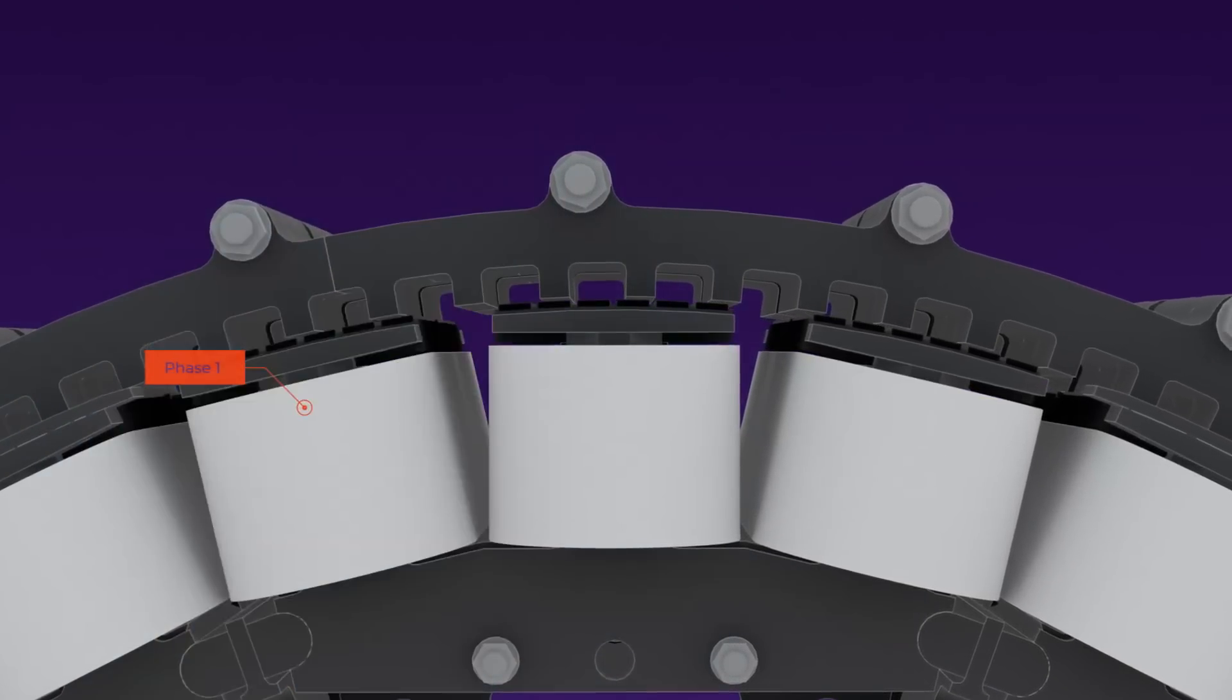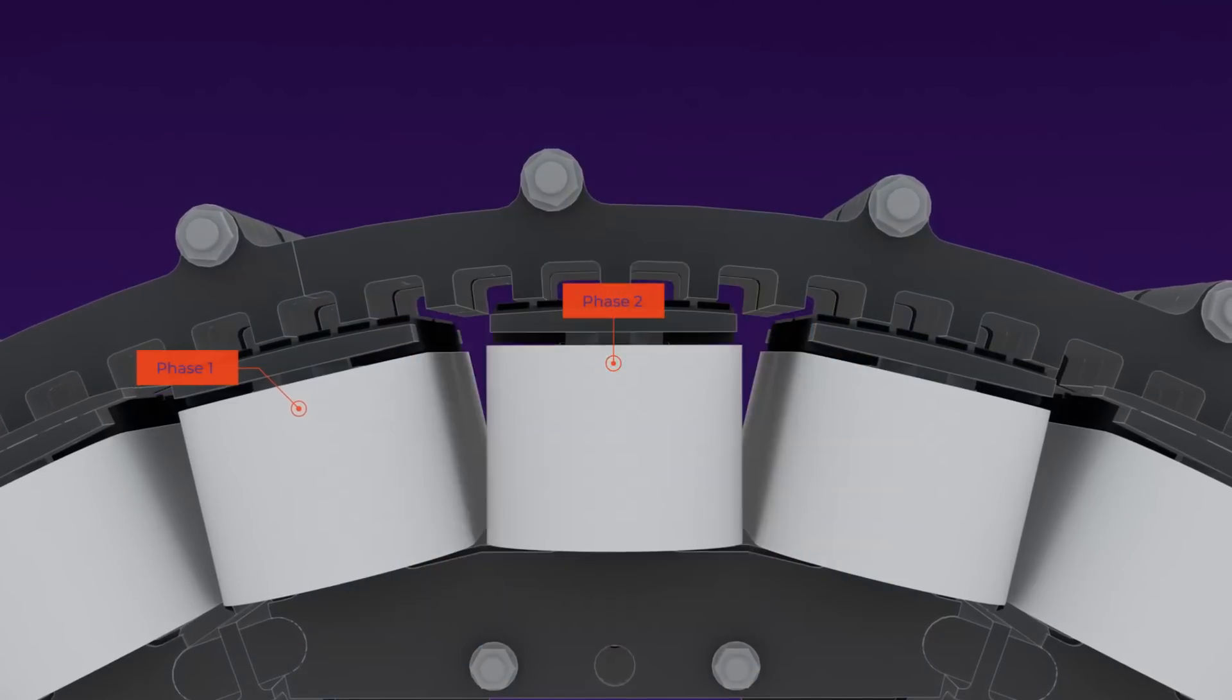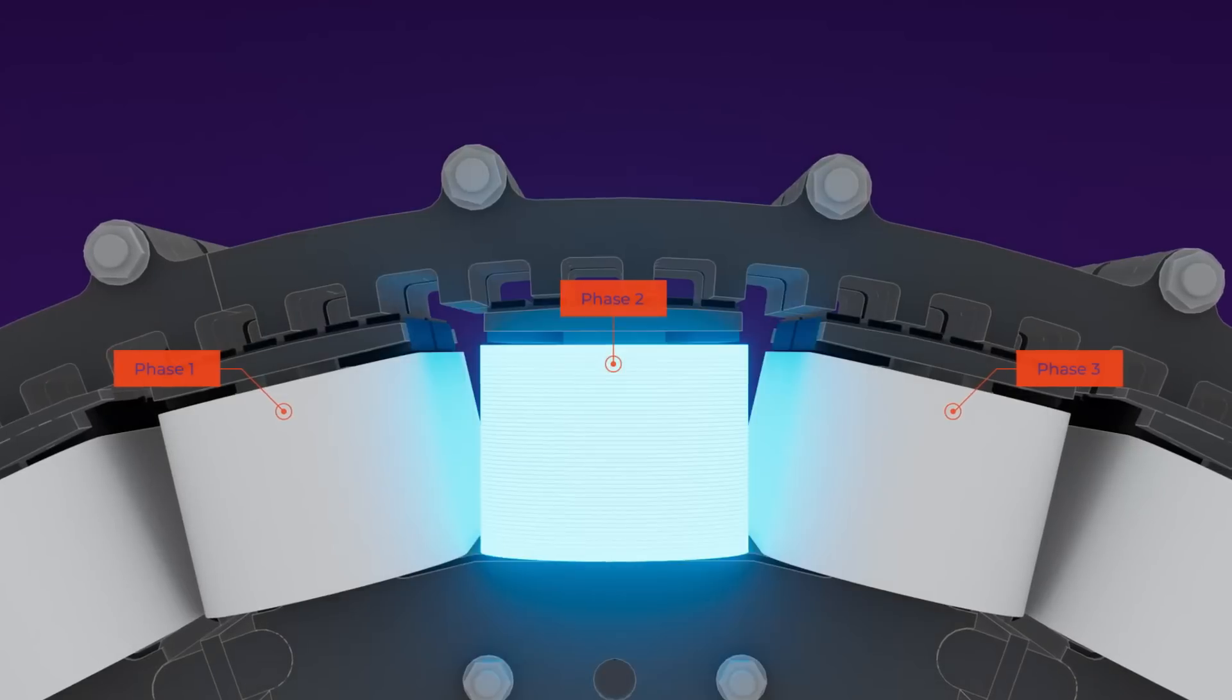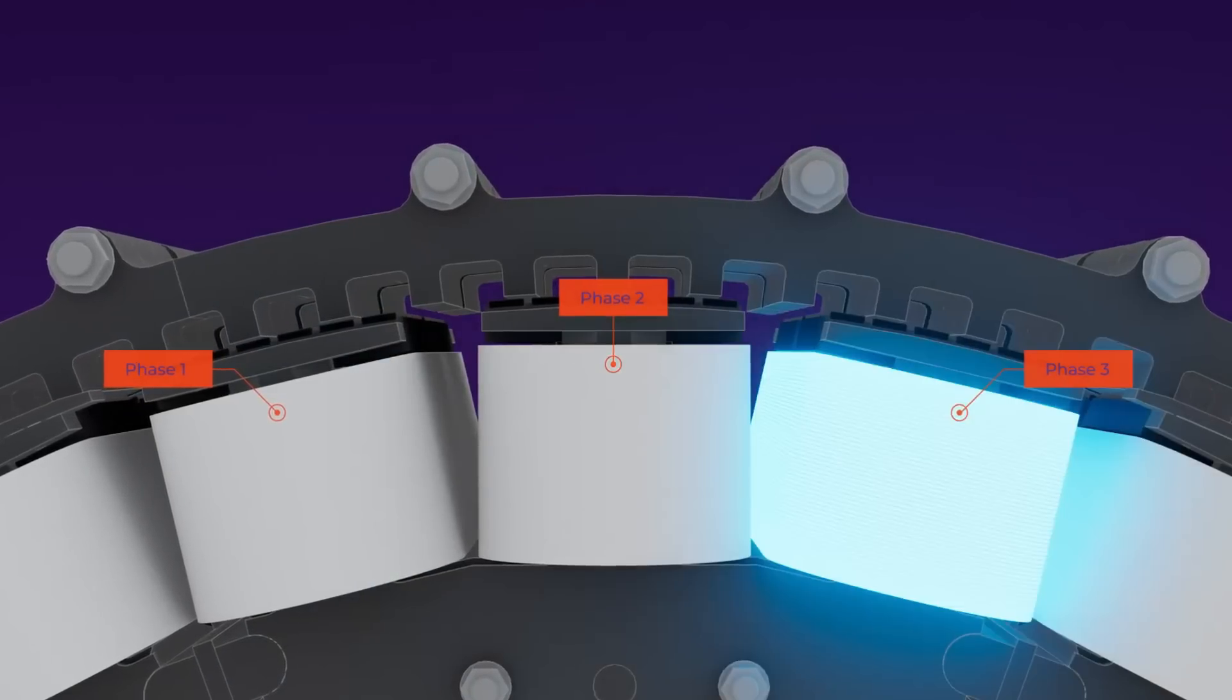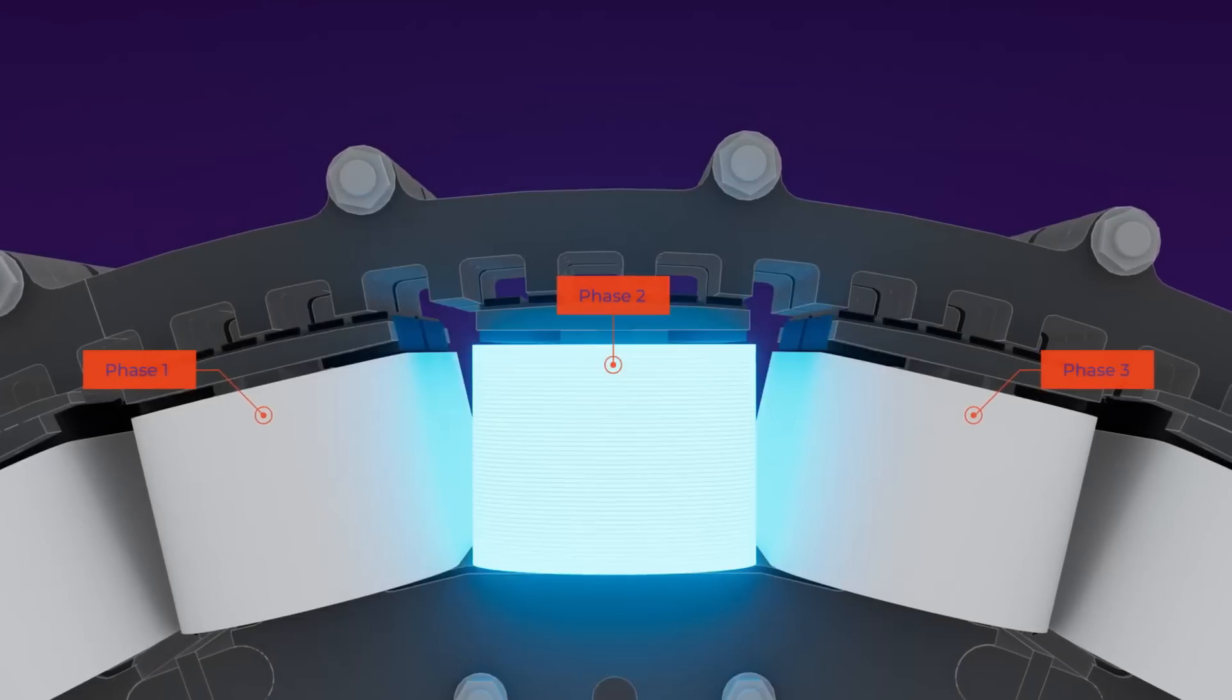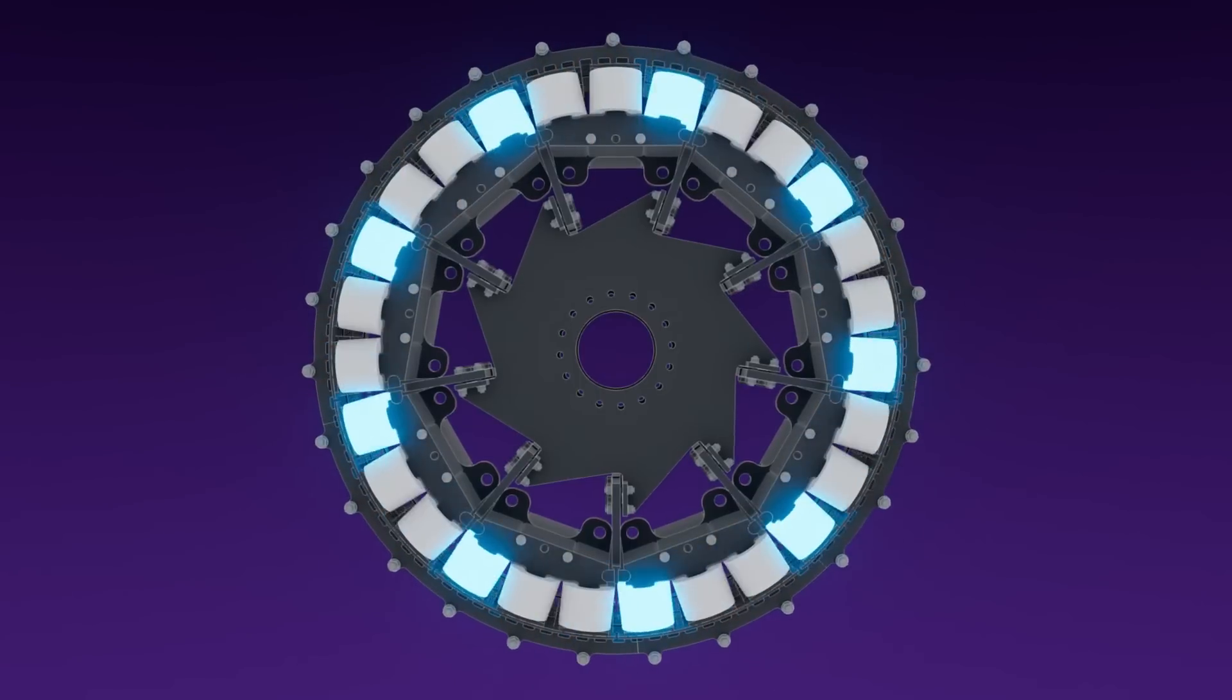There's a regular pattern of alignment and misalignment, and this allows the rotor to actually rotate. Once it gets through the third phase, the cycle begins all over again. The advantage to this kind of machine is that it's scalable, so you can produce more torque with more segments.